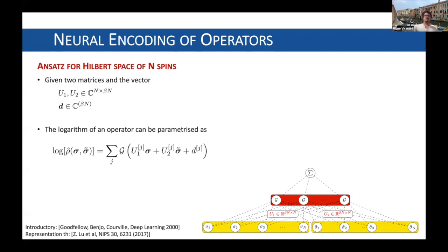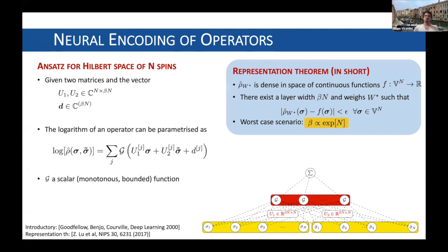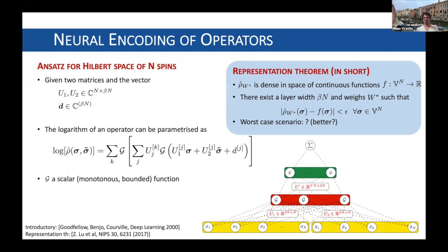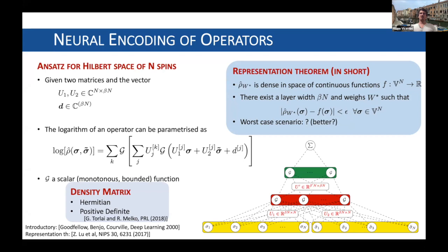We can do better: representation theorems tell us that this can approximate any function provided the hidden layer is large enough. We can make those networks deeper, use convolutional layers, and do many things — but we are forgetting that the density matrix is Hermitian and positive definite, so it has a positive spectrum. During our learning procedure, we need to recover those two properties. Hermiticity is simple to enforce, but positive definiteness is quite hard.